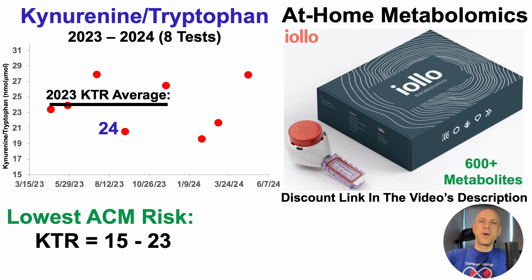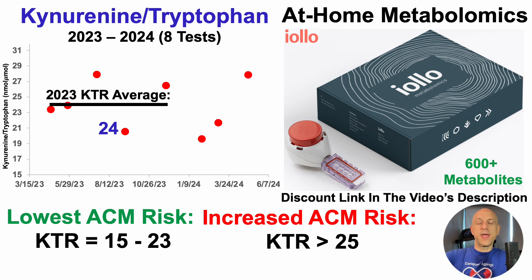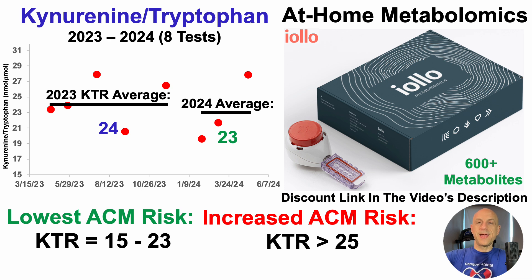Somewhat good news is that I'm not at a higher risk for all-cause mortality — granted, it's just one group of five tests, not 50 years of data. All-cause mortality risk was associated with a KTR greater than 25, so 24 isn't at the lowest risk and it's not at the highest risk — it's somewhere in the middle, so I've got work to do to improve that. In 2024, I currently have three tests and the average KTR is now 23, so I'm at the high end of the range for lowest all-cause mortality risk, but I'd like to get it a little bit lower.